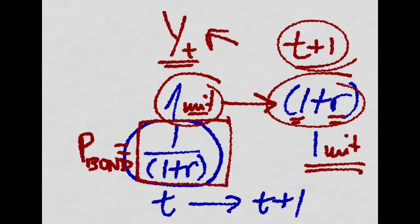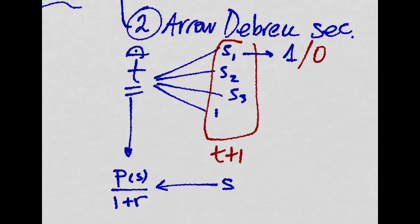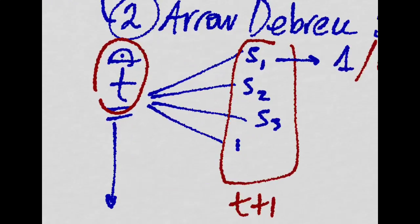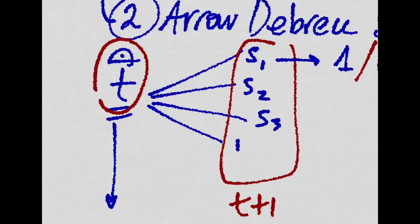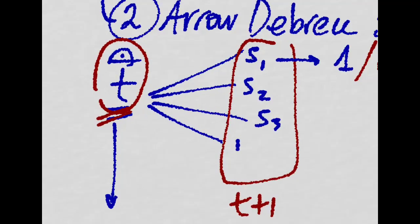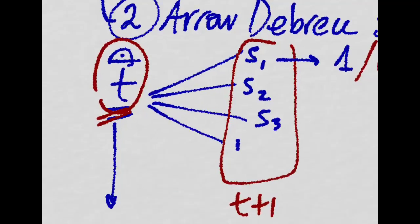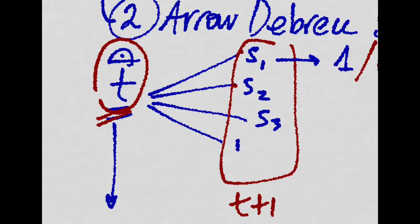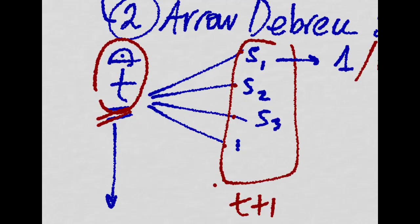Now there is another kind of asset which we will call the Arrow-Debreu security which works in the following way. Imagine you are starting from the point of view of time T and you want to insure yourself against all the possible states of the world that could happen at period T plus 1.